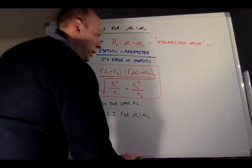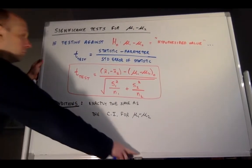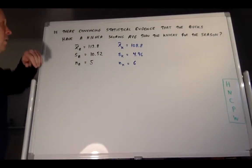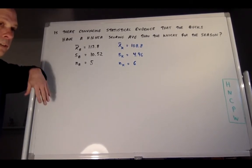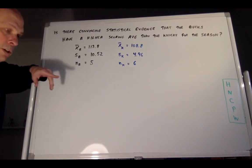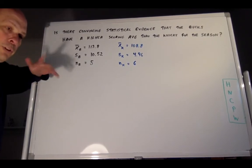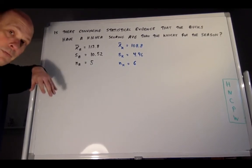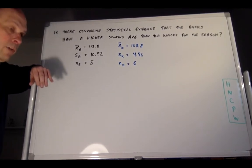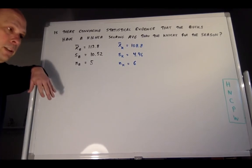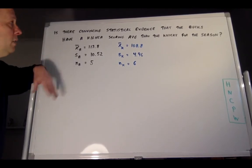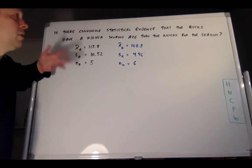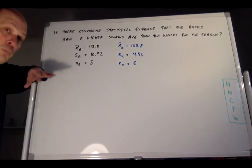Let's launch into the following significance test. Our question is: is there convincing statistical evidence that the Bucks have a higher scoring average than the Knicks for the season? We have to erase our memory of the true difference I mentioned, and block out any prior knowledge about these two teams. We're doing a significance test based on the small samples taken, to see if we have evidence that the Bucks have a higher scoring average for the entire season.